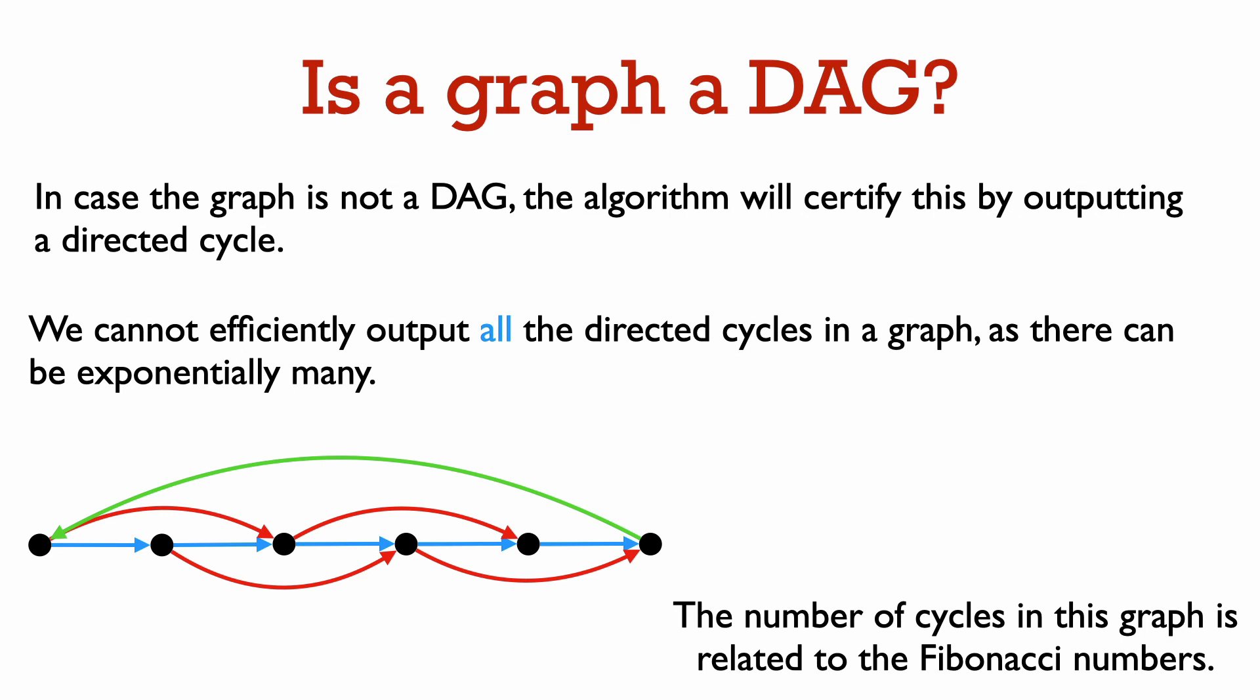In case the input graph is not a DAG, our algorithm for detecting a cycle will actually output a directed cycle. So in this way, the algorithm certifies that the given graph is not a DAG. So note that to certify that a graph is not a DAG, it suffices to just find one directed cycle.